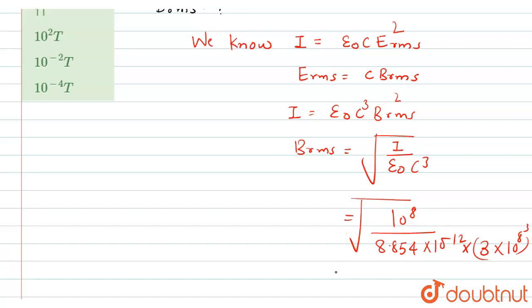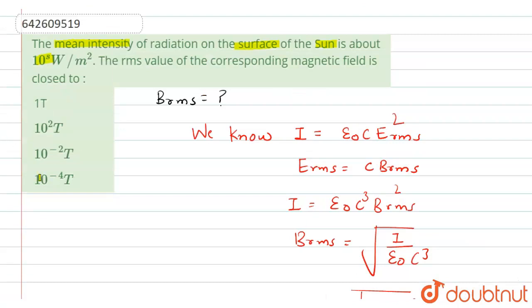Now on solving this value we get value nearly equal to 10 raised to power minus 4 tesla, so it is a value of B RMS. That is option C, hence option C is right.